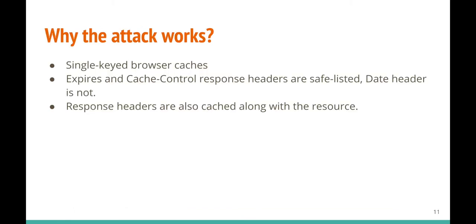Let's talk about why this attack works. Browsers employ many security mechanisms such as SOP, CSP, or CORS to control what can be loaded and executed. Despite these mechanisms it is still possible to learn the exact time when a resource was cached. The three key insights making our attack possible are: browser caches are single-keyed; Expires and Cache-Control response headers are safelisted; the Date header is not. Response headers are also cached along with the resource, and CORS filters the Date header from script access.